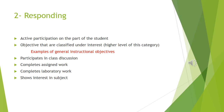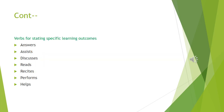Responding refers to active participation on the part of the student. At this level, he not only attends to a particular phenomenon but also reacts to it. The higher level of instructional objectives at this level include those commonly classified under interest. General instructional objectives include: participates in class discussions, completes assigned work, completes laboratory work, and shows interest in subject. Verbs for stating specific learning outcomes include: answers, assists, discusses, reads, and helps.